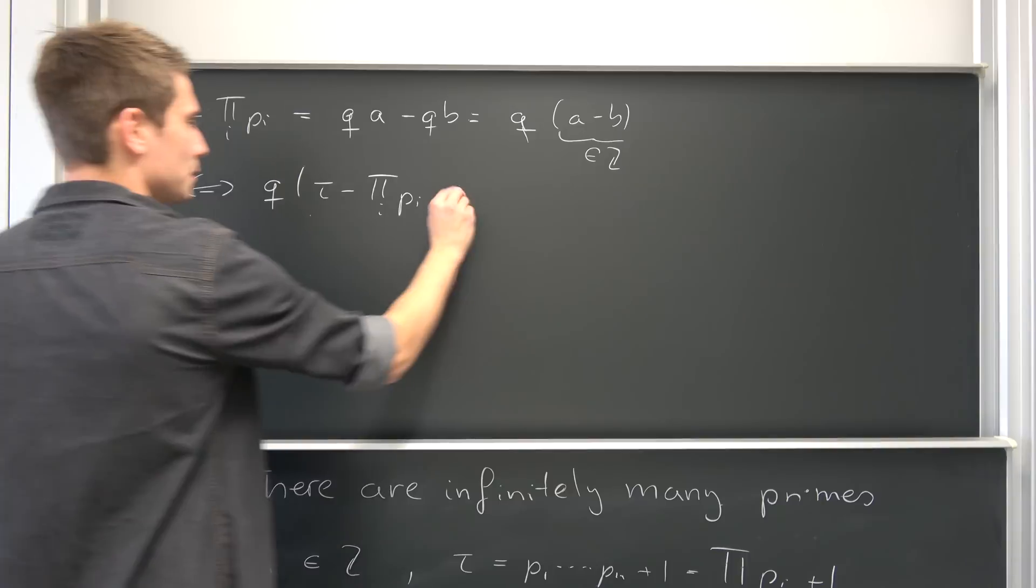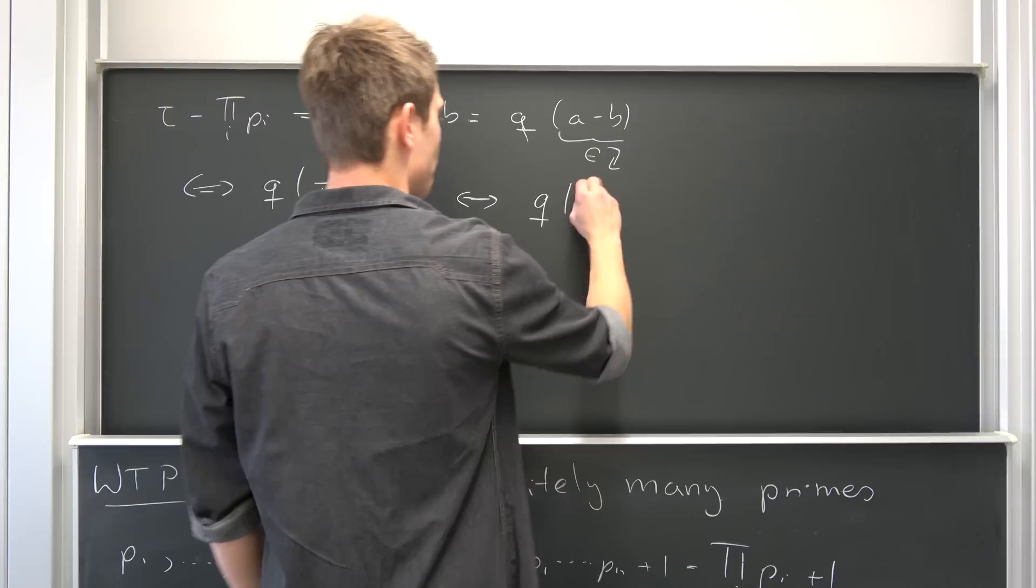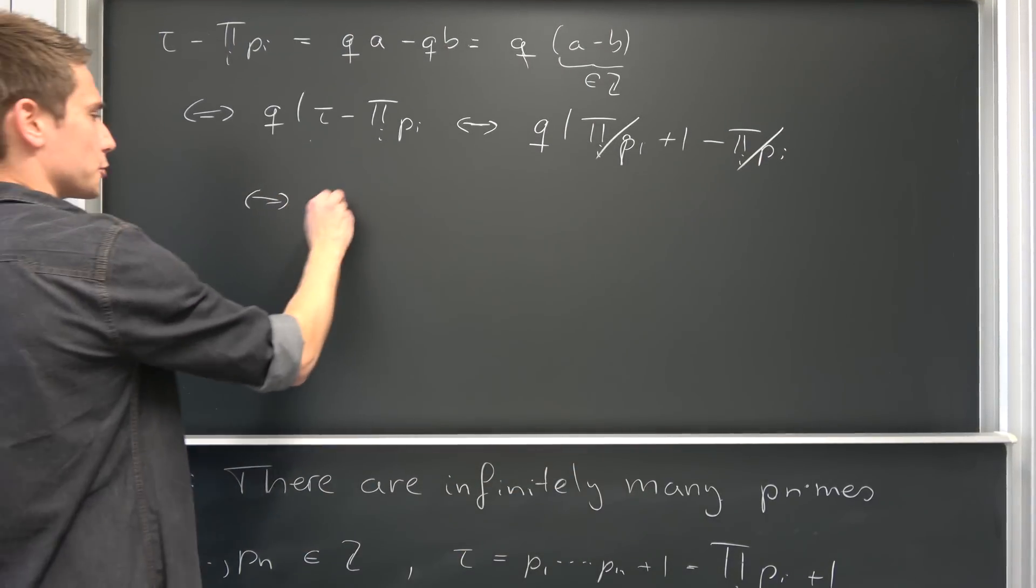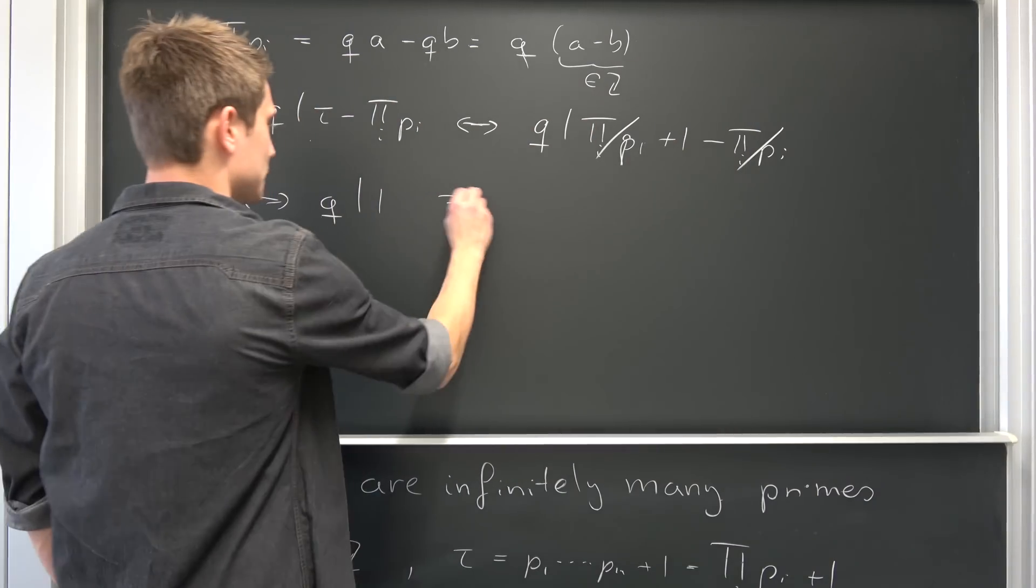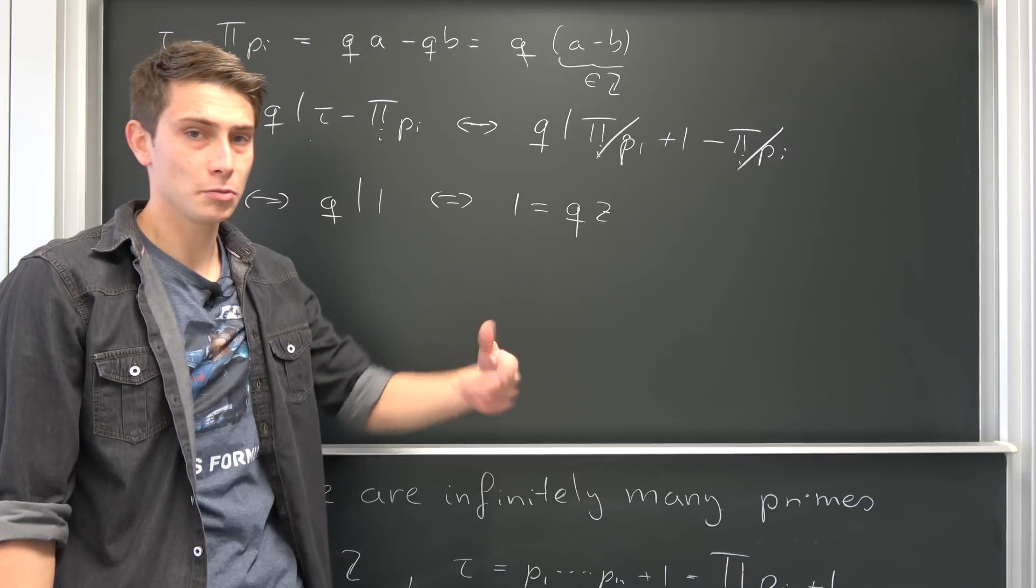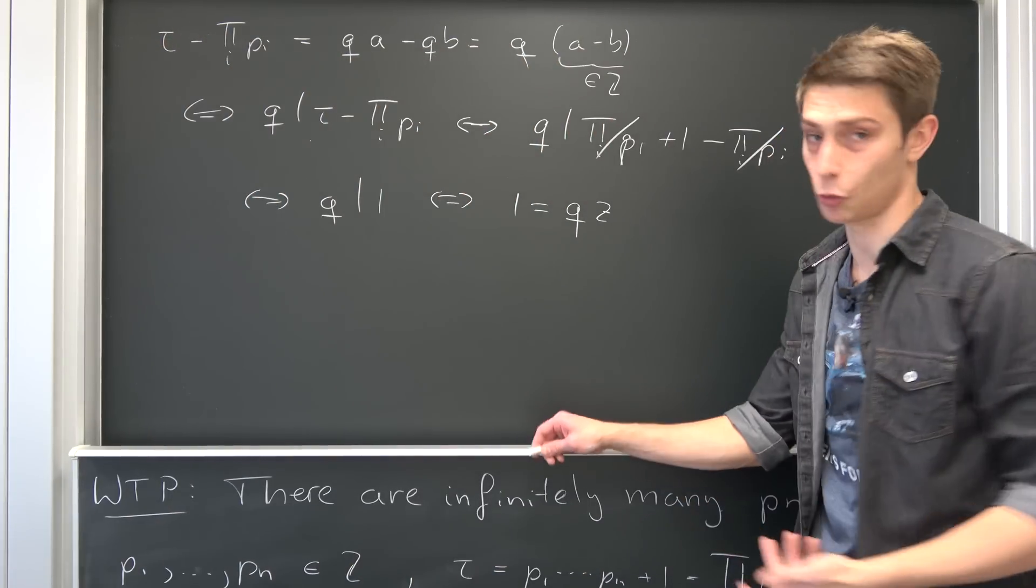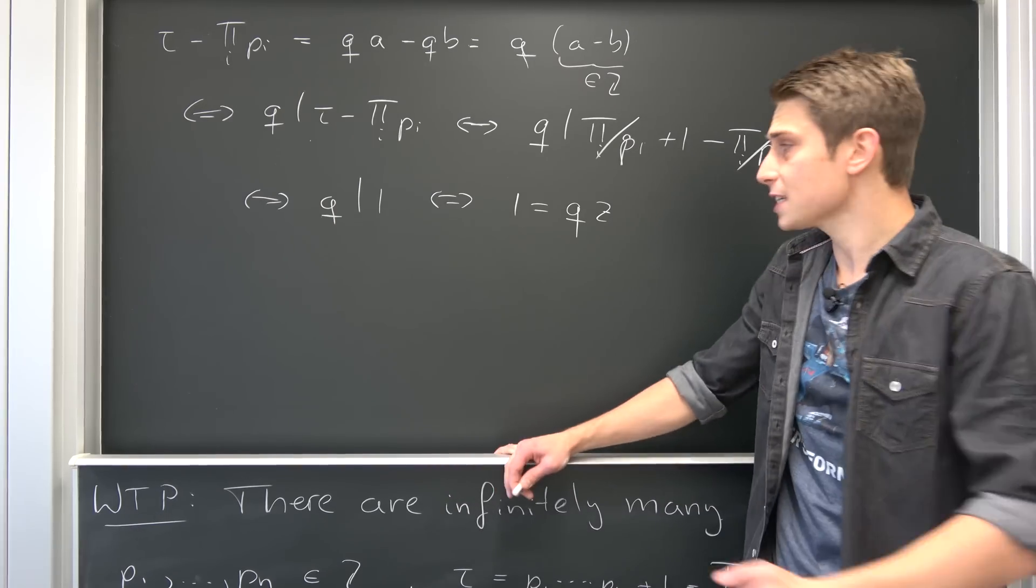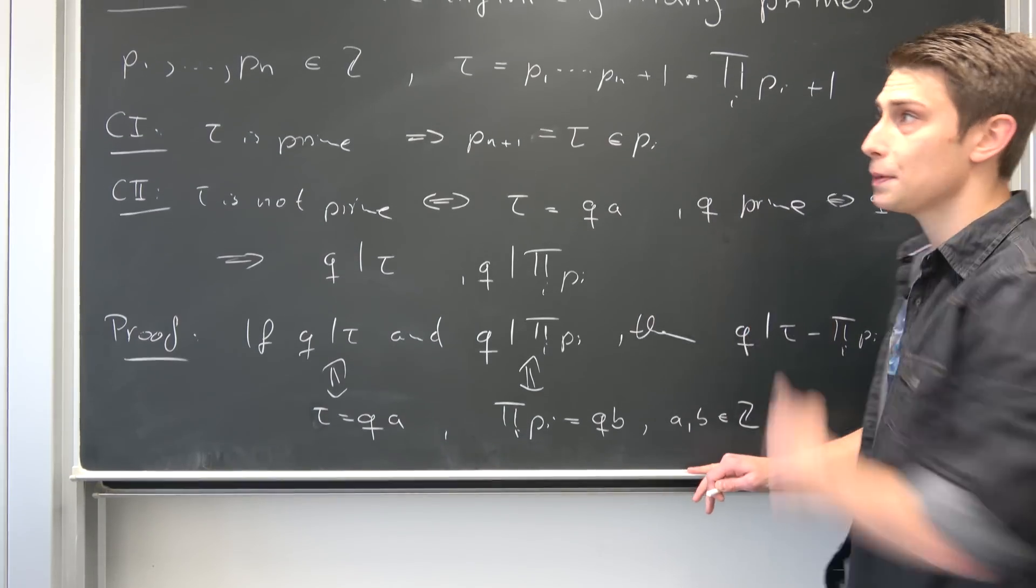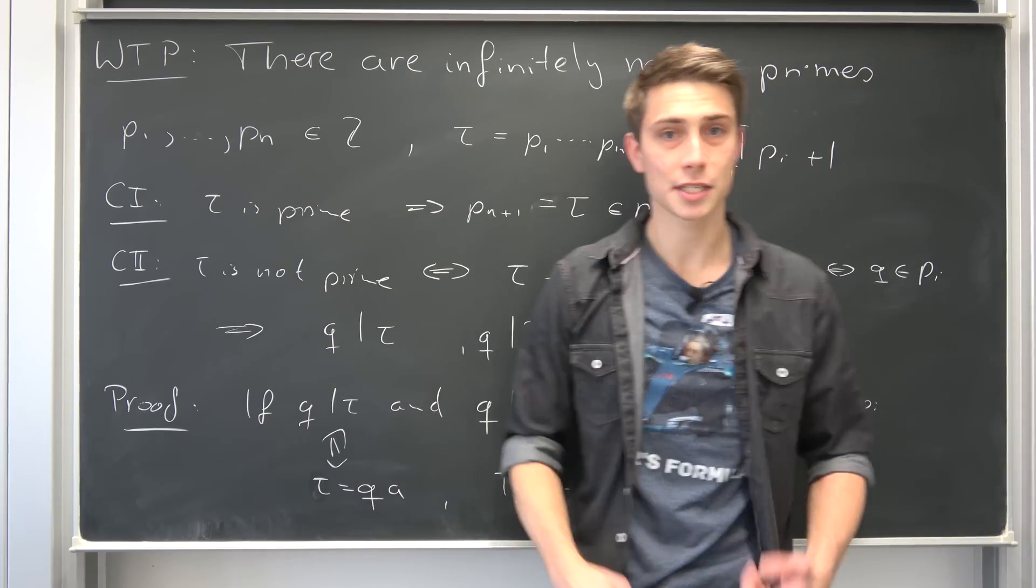q divides tau minus this pi thing. But we can expand this a little bit because we can actually calculate this, because tau is nothing but pi plus 1. So that means q divides pi plus 1 negative pi. This and that is going to cancel out, meaning that q divides 1. But what does it mean for q to divide 1? Well, this only means that 1 can be expressed as q times z, for example, with z out of the integers. But this doesn't work out because q has been assumed to be a prime number. So this right here only works if, in the integers at least, if those two are 1. Otherwise it just wouldn't work out. So this being 1 and this being 1 would be the only solution. But this doesn't work because, well, 1 is not a prime number. So it means it's not on our list of prime numbers, meaning that this is a contradiction to this statement of q being a prime number on our list. So this case doesn't work out, and this is the only case which works out. So that means tau is now a new prime number on this list, leading to contradiction.